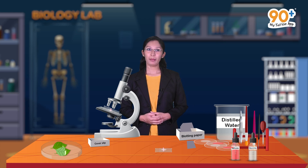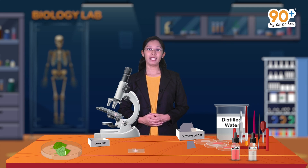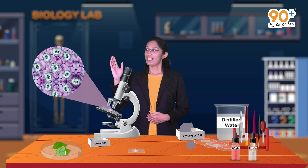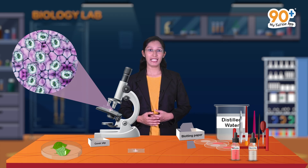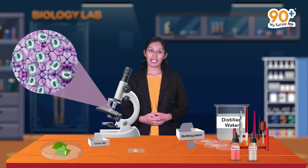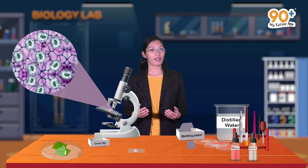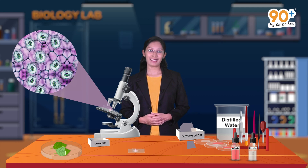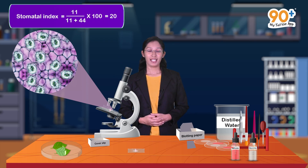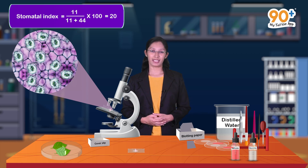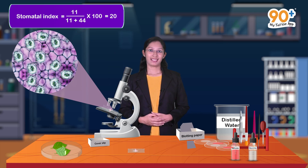In the same way, we observe the lower epidermal peel under the microscope. Here the stomata and epidermal cells can also be seen very clearly. The total number of stomata is 11 and the total number of epidermal cells is 44. Using the equation: stomatal index = 11 / (11 + 44) × 100 = 20.